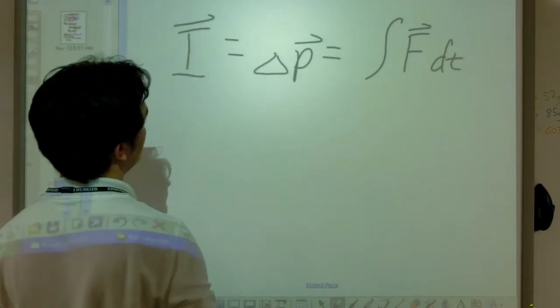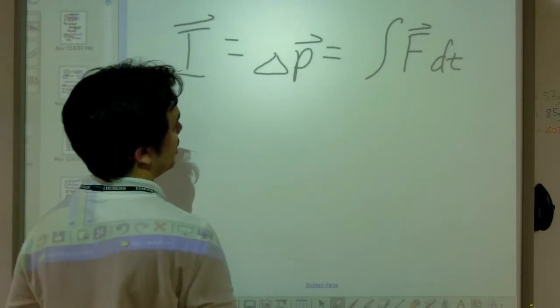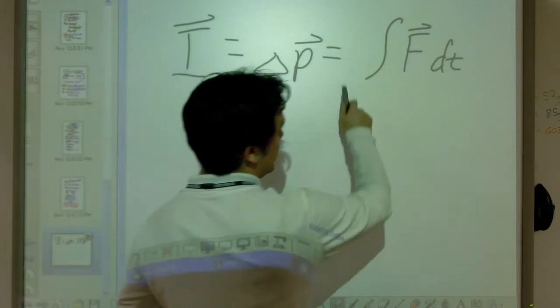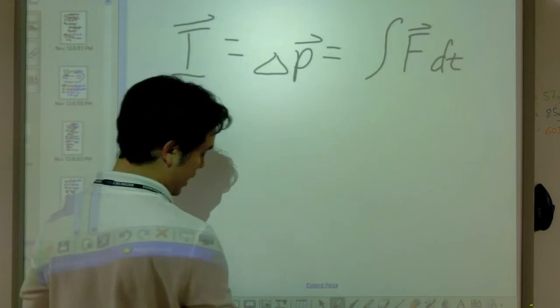In this case, the direction of the impulse points in the same way as the direction of our change, our delta p, our final minus initial. And then it's also in the same direction as the force that is supplying that impulse.